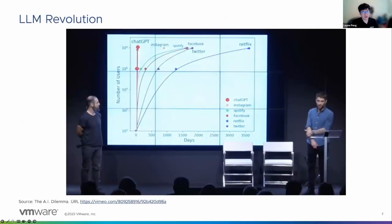The last keyword is LLM, as our title suggests. I believe most people here must have heard of LLM before because this is the hottest topic this year. This image is from the presentation 'The AI Dilemma.' It shows that ChatGPT is the fastest platform or software to achieve 100 million users in history, much faster than Instagram, Facebook, Twitter, and other famous names.